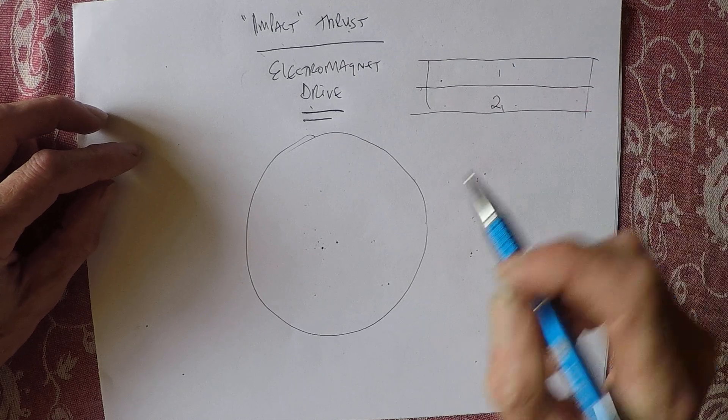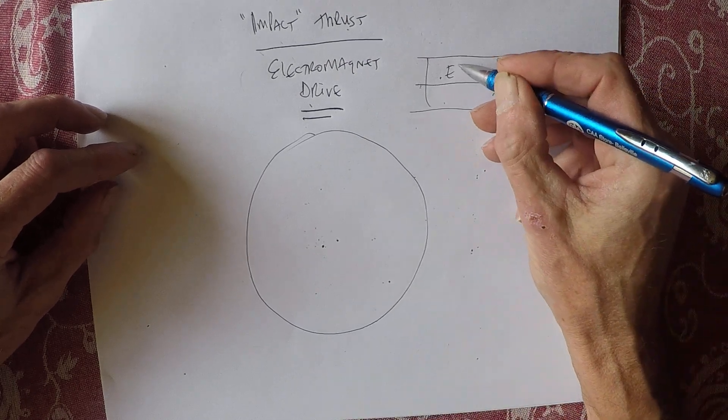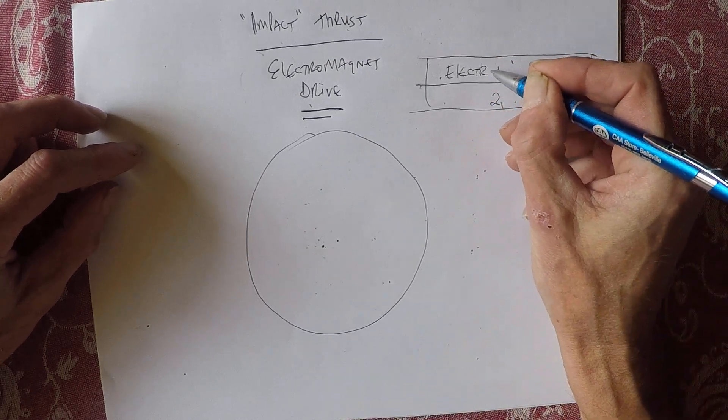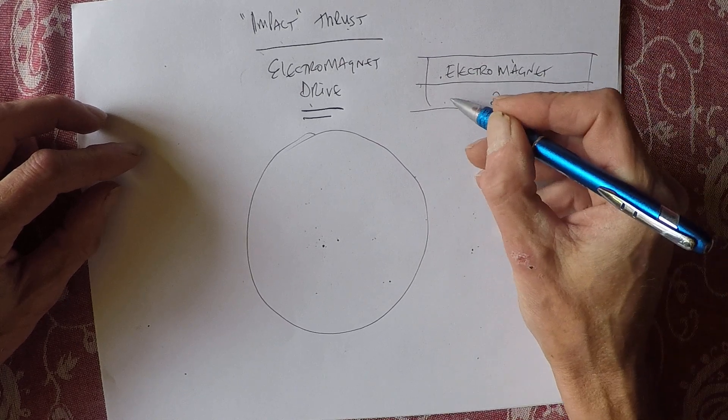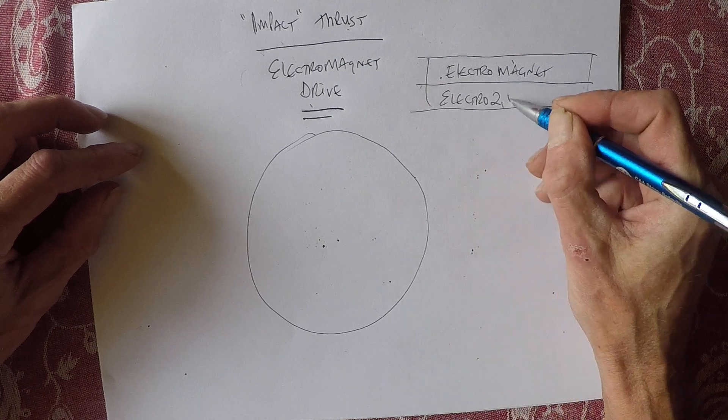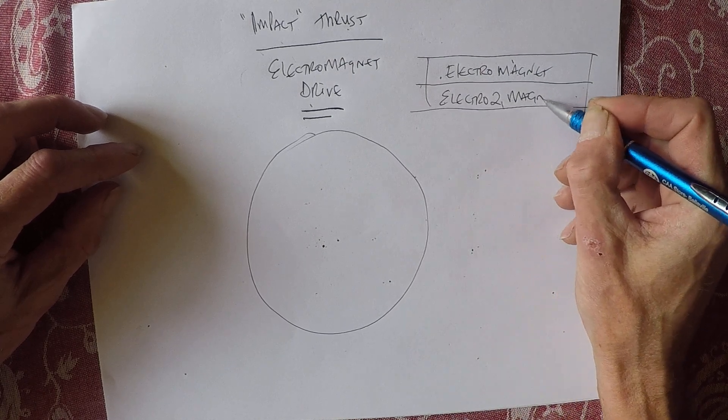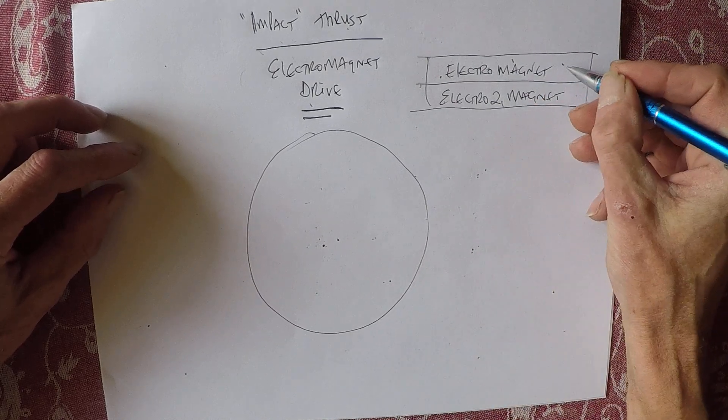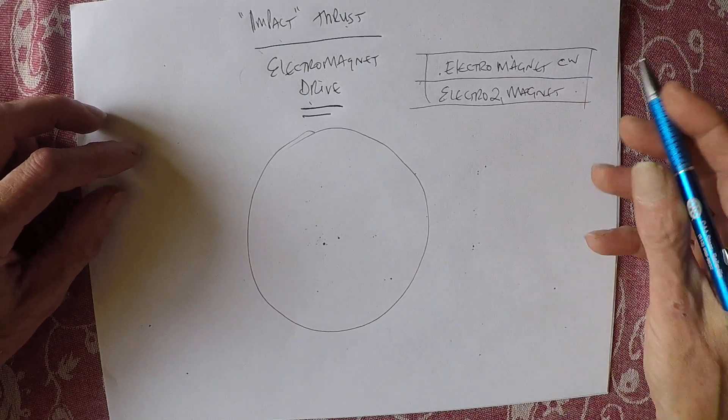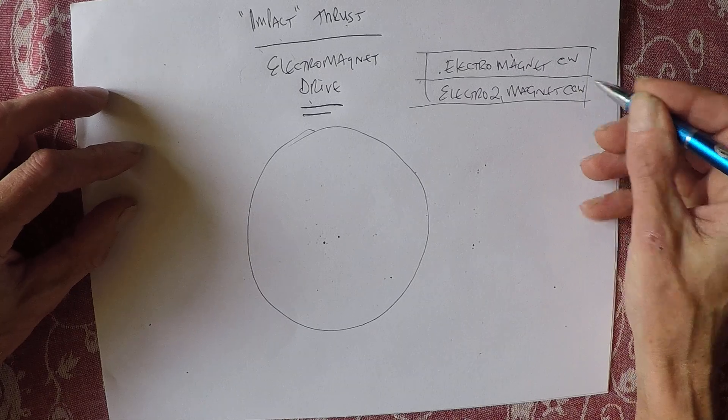One and two. This is an electromagnet and this is an electromagnet. And it's funny, now I'm thinking about it - it's clockwise and counterclockwise. This one spins either clockwise or counterclockwise, it doesn't matter, and this one spins in the opposite direction.